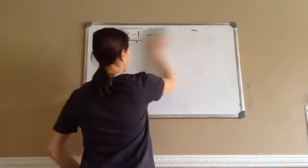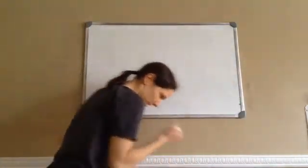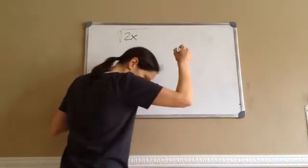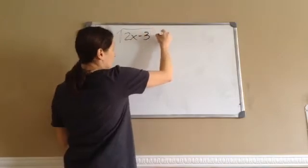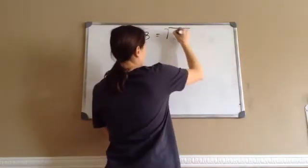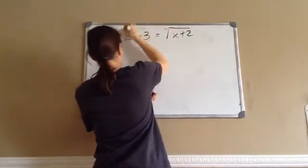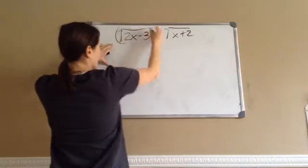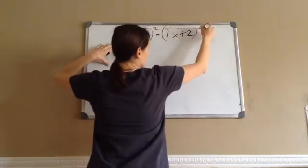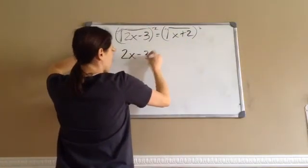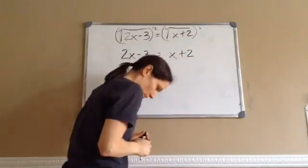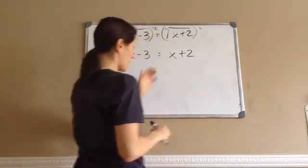Each of these problems presents a new type, so make sure you follow along. Here's 108.5: square root of (2x − 3) equals square root of (x + 2). Because both sides are square roots, we square both sides to remove them, giving 2x − 3 = x + 2. Now solve for x from there.